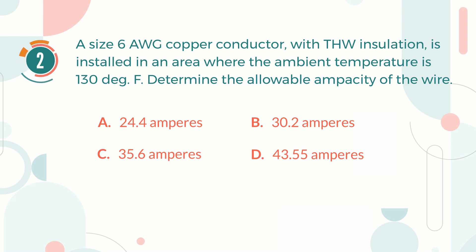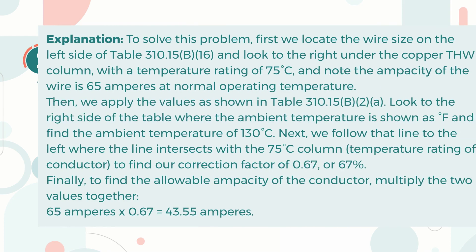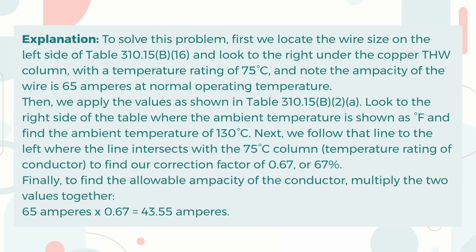The correct answer is D. 43.55 Amperes. Explanation: To solve this problem, first we locate the wire size on the left side of Table 310.15(B)(16) and look to the right under the copper THW column, with a temperature rating of 75 degrees Celsius, and note the ampacity of the wire is 65 Amperes at normal operating temperature.